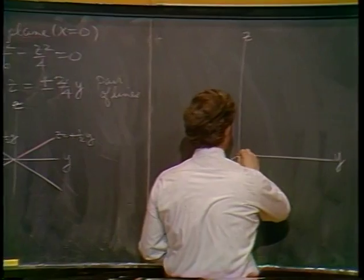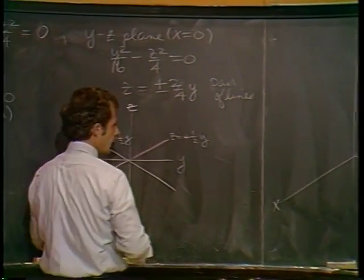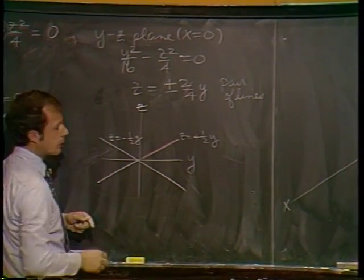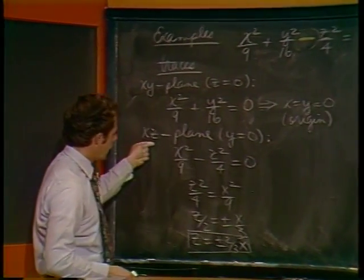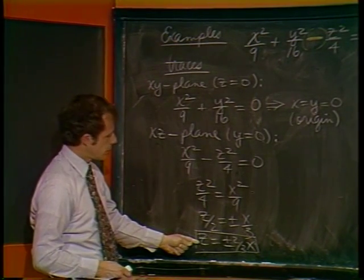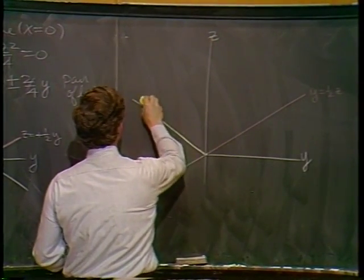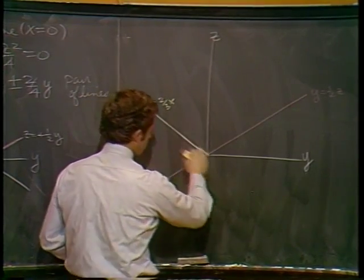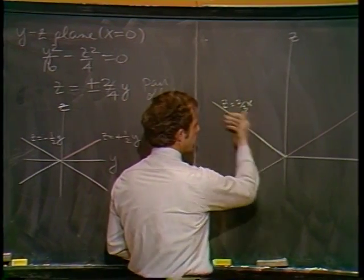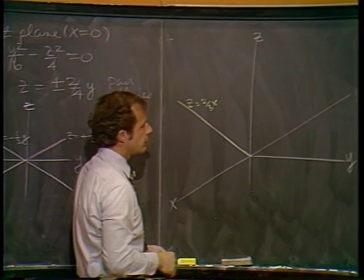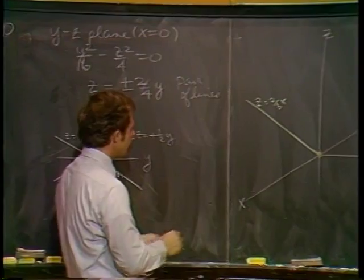If you said X equals 0, you've got Y squared over 16 minus Z squared over 4 equals 0. So if you solve that, I think you'll see that Z is plus minus 1/2 Y. And that's also a pair of lines. Let's graph this one in the YZ plane - you've got Z equals plus 1/2 Y and also minus 1/2 Y. Looks like that.